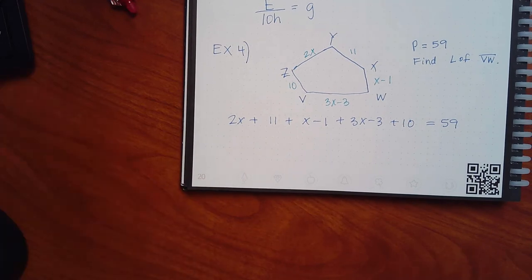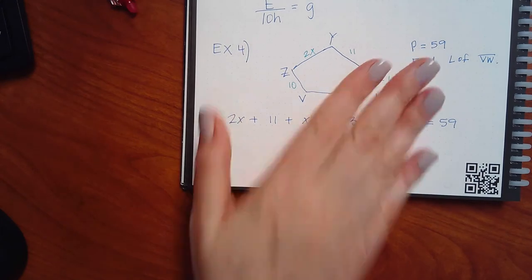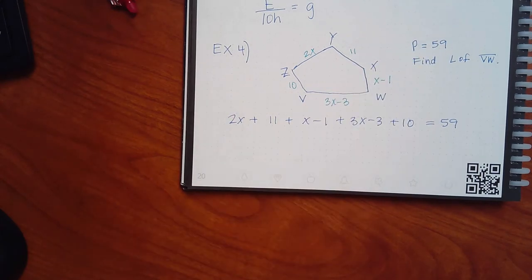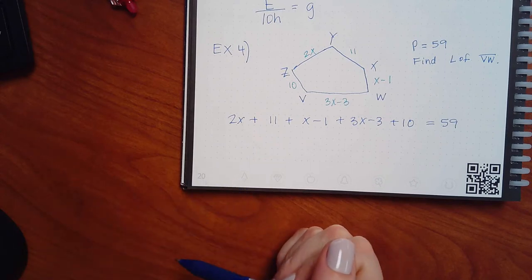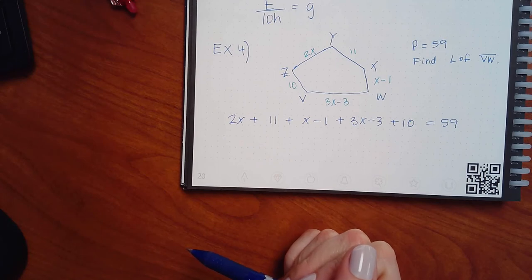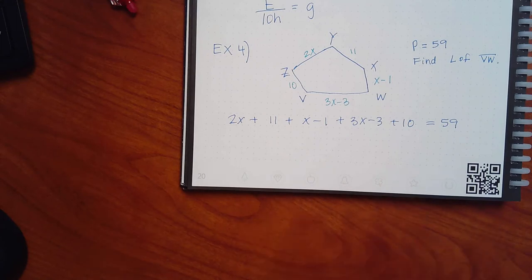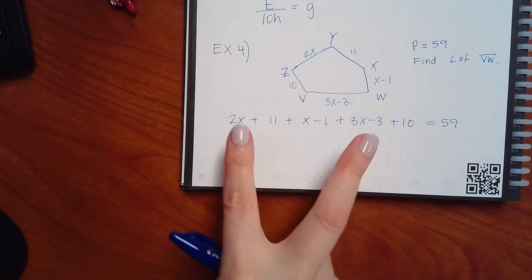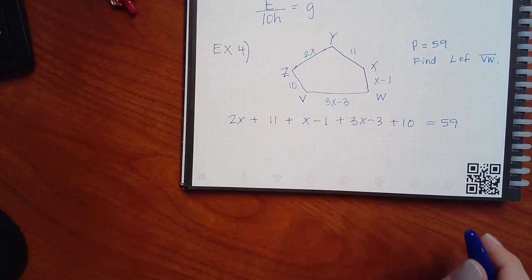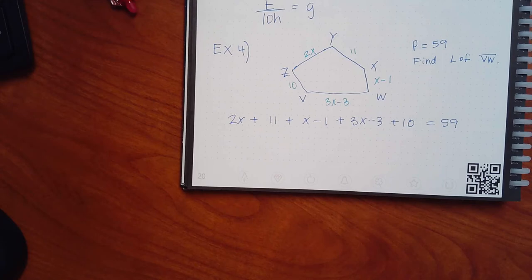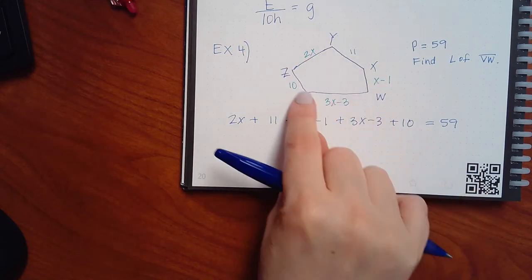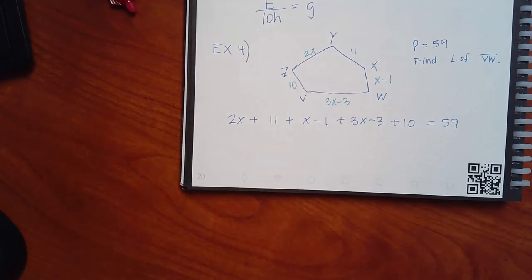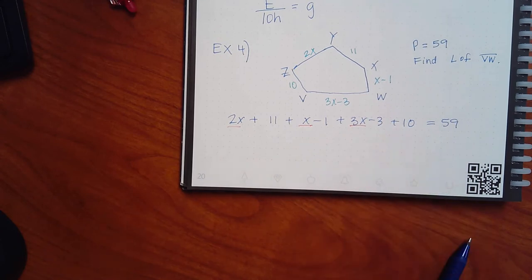No parentheses, no fractions, but there are like terms on the left side. Step three: combine them. I have 2x + x + 3x = 6x, and the constants 11 − 1 − 3 + 10. Someone pointed out I missed the −3, so 11 − 1 − 3 + 10 = 17. So the equation becomes 6x + 17 = 59. And you can start anywhere around the perimeter as long as you include every side.